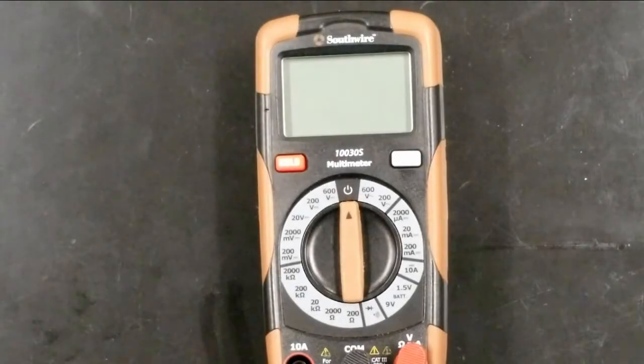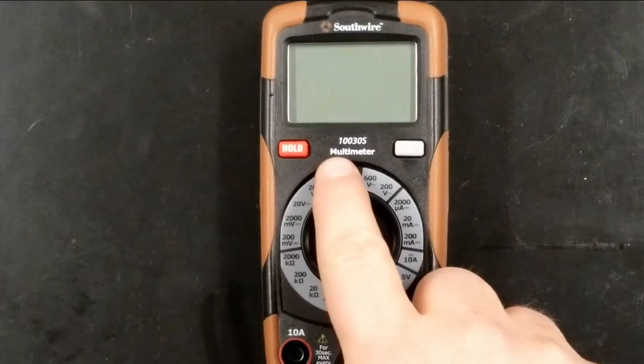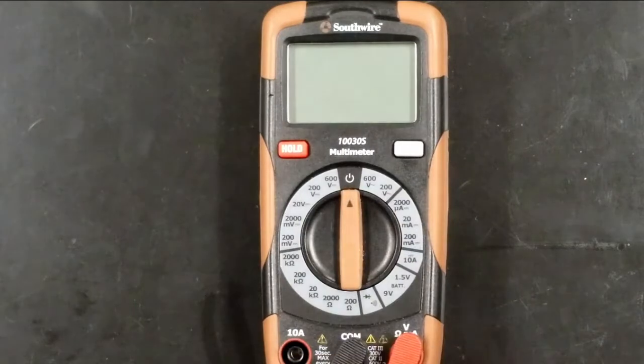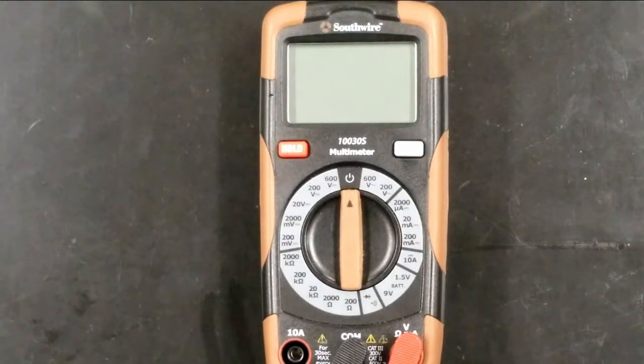The next thing we're going to look at is a standard digital multimeter. This thing can measure both the electric current, or the amount of charge flowing through a circuit as a function of time, and also the electric potential, aka voltage.